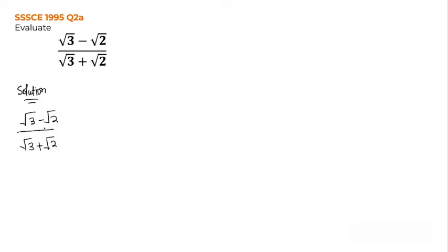In doing that, we need to multiply both the numerator and the denominator with something. We want to get rid of the root sign at the denominator, because at the denominator it becomes difficult for us to divide. So we need to multiply both the top and the bottom by something, which we call the conjugate. The conjugate is where you take the denominator and just change the sign.